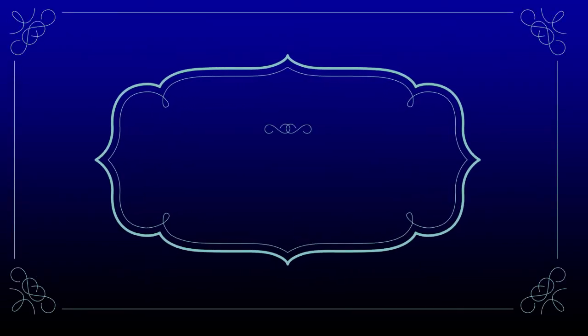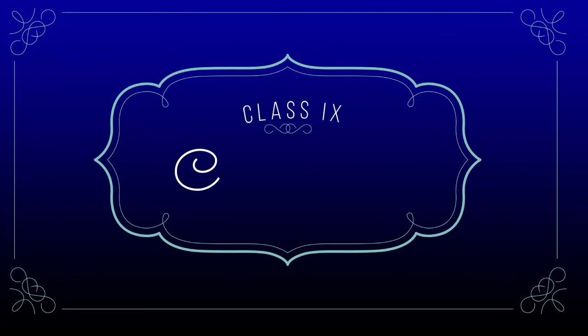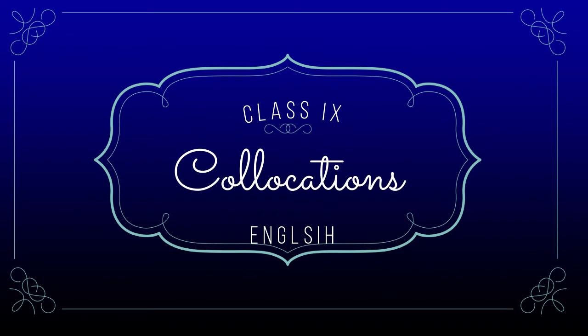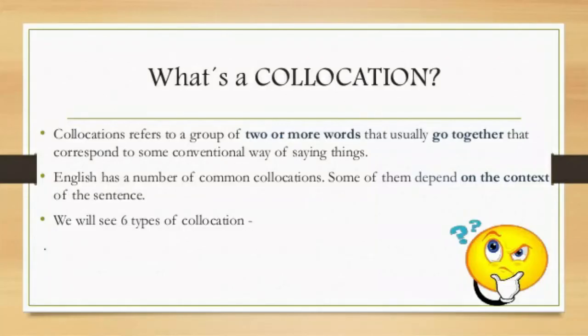Hi students, once again welcome back to the world of English. In today's session we are going to deal with collocations. We'll be coming to know the definition of collocations. A collocation is an arrangement of words or other elements, especially those that commonly co-occur. In simple terms, it refers to a group of words that usually go together and correspond to some conventional way of saying things.